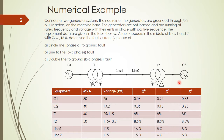We consider a two-generator system, and the generators are connecting with each other via two transformers T1 and T2. T1 is a Y-to-Y connection with the neutral connected to ground. T2 is a Y-to-Delta connection with the neutral on the primary side connecting to the ground. T1 and T2 are connecting to each other via two lines, line 1 and line 2. The neutral of generator 1 and generator 2 are also connected to ground via a 0.3 PU reactor.